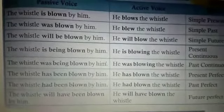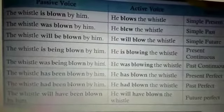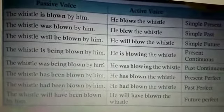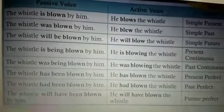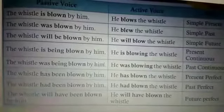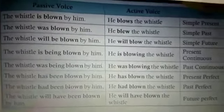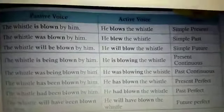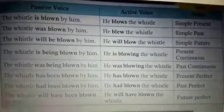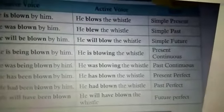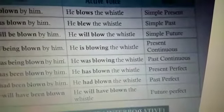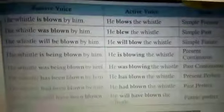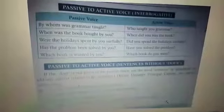Passive 'The whistle had been blown by him' → active 'He had blown the whistle' (past perfect). Passive 'The whistle will have been blown by him' → active 'He will have blown the whistle' (future perfect). Now we shall move on to passive to active voice in interrogative sentences.